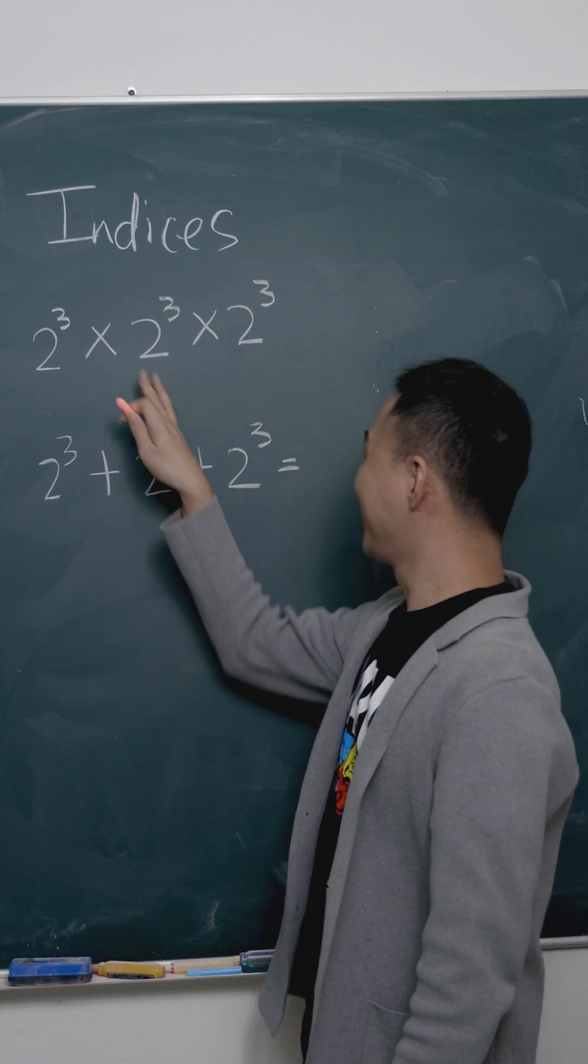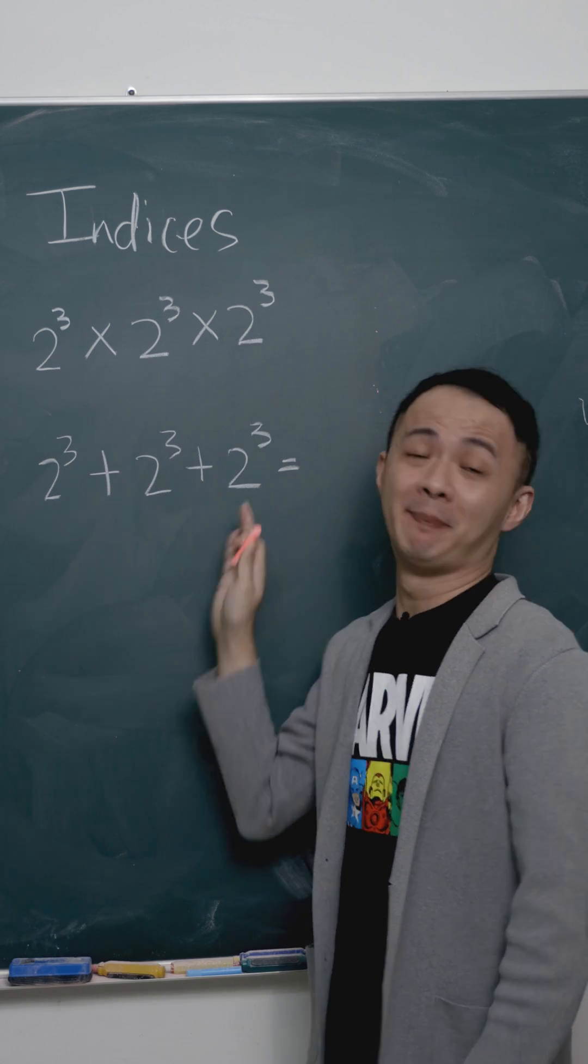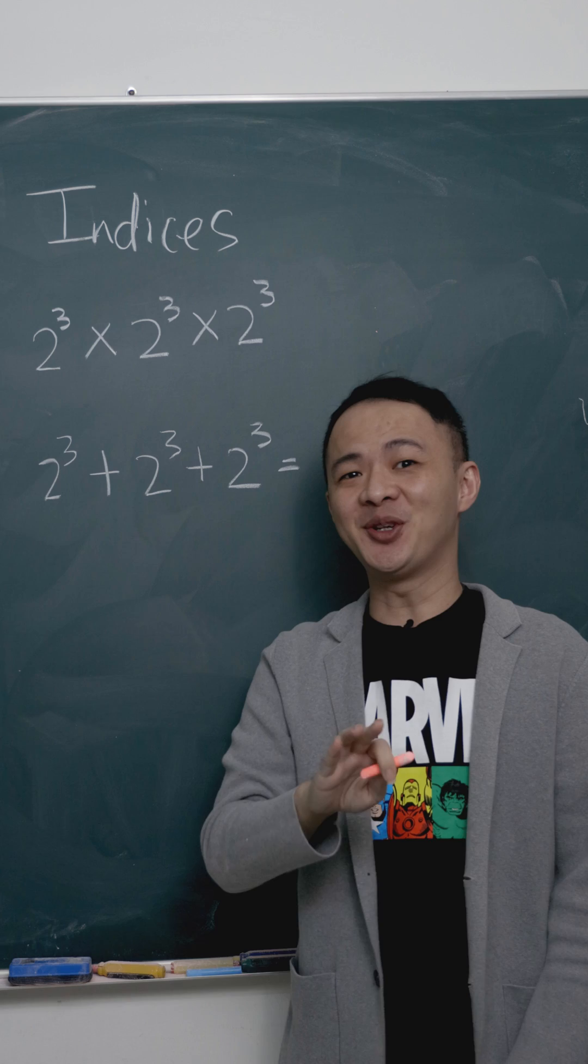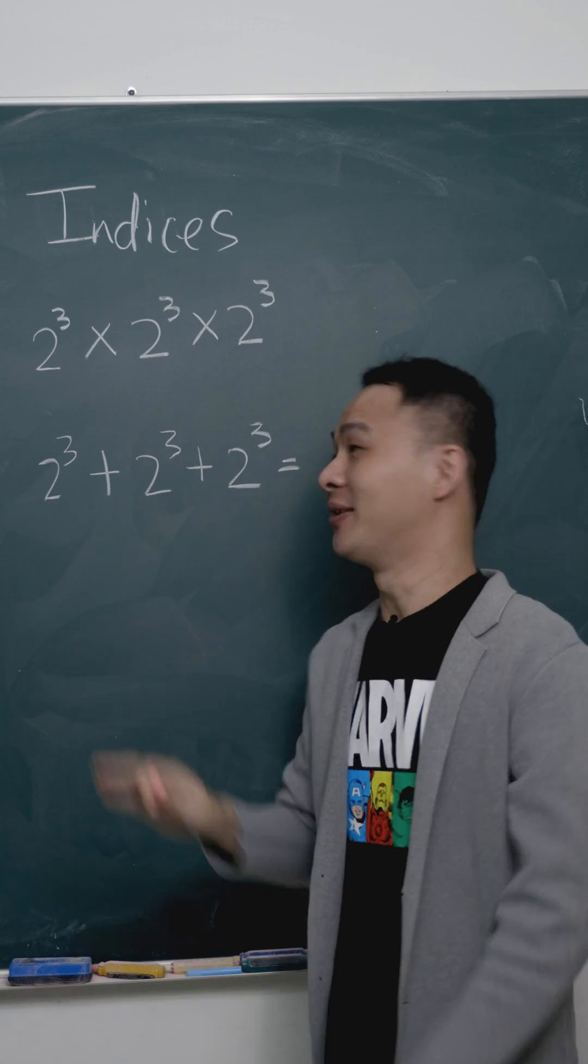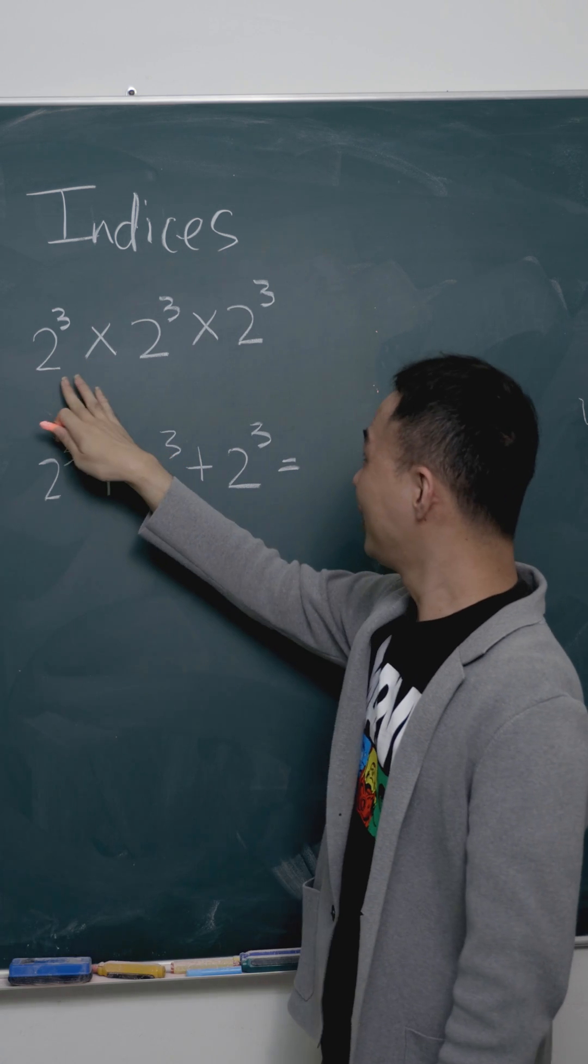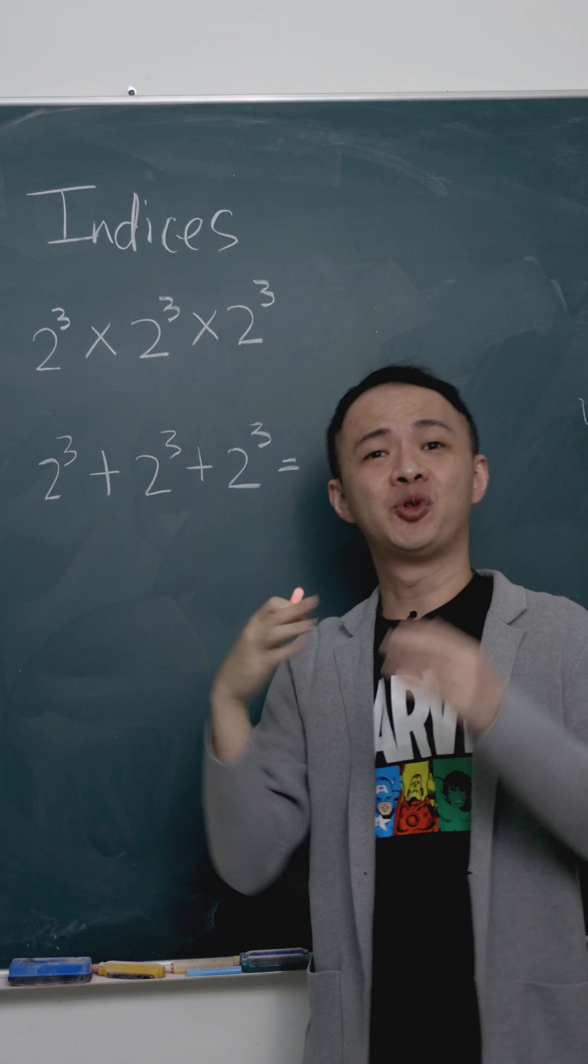A lot of students keep asking me what's the difference between multiply and plus for indices, so in this video I'm going to show you the difference between them. Let's say 2 power of 3 multiply 2 power of 3 multiply 2 power of 3.